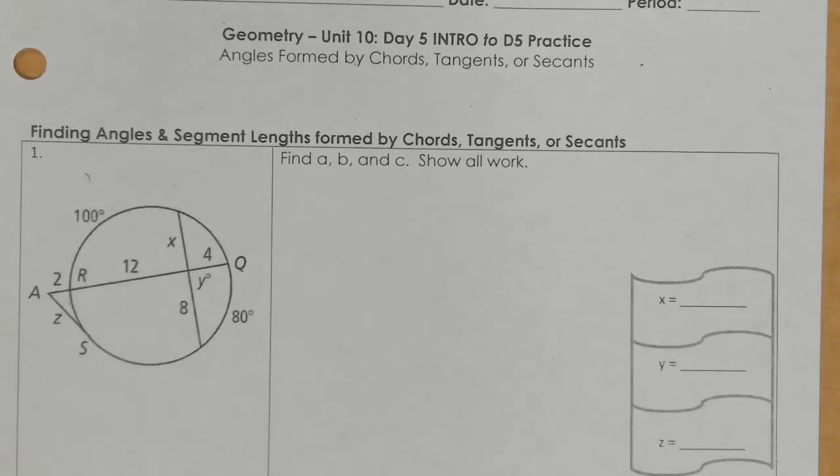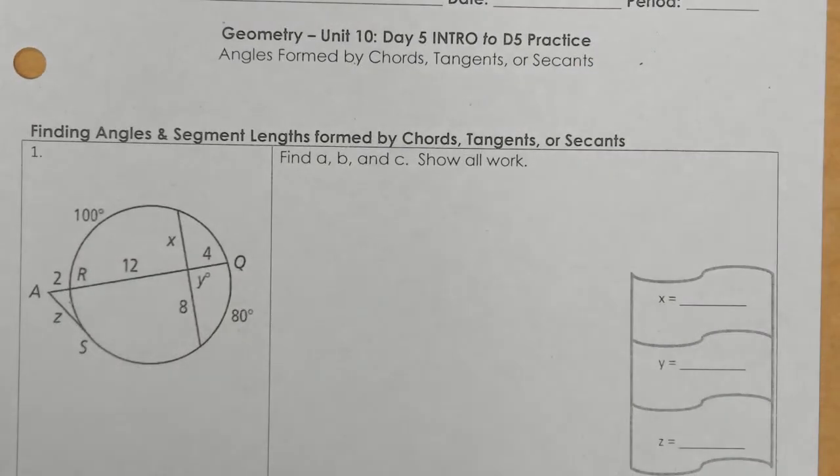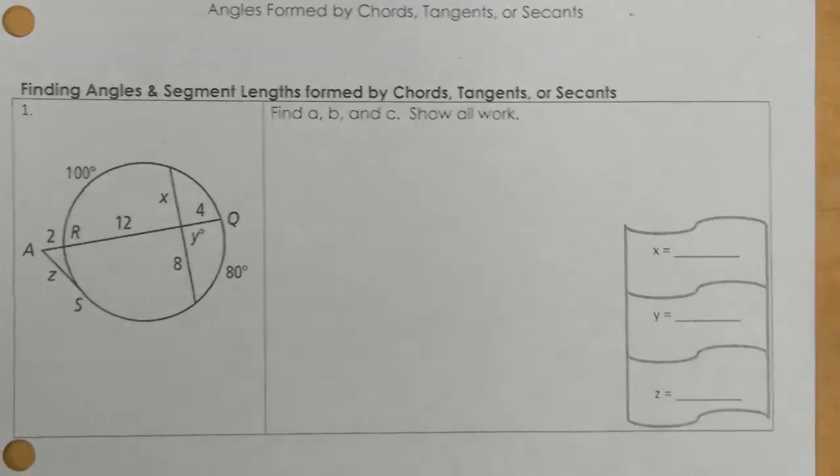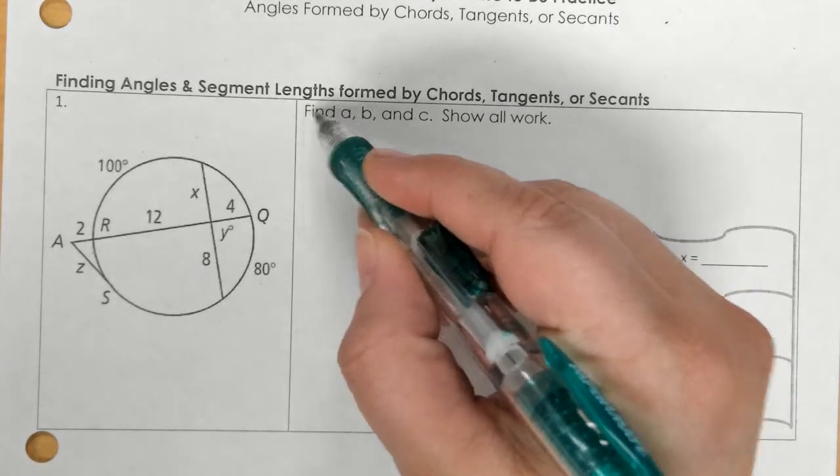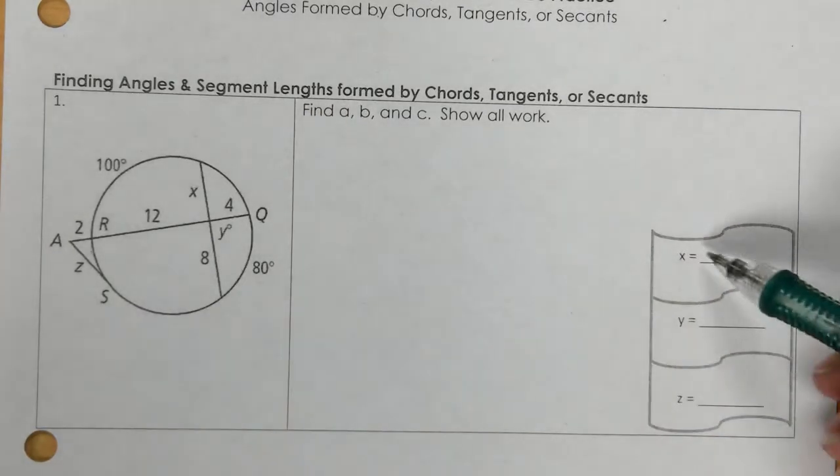This is the day 5 intro to day 5 practice. You have to use three different rules to get your answers: x, y, and z. First of all, this is a mistake. It should not say find A, B, C. It should say find x, y, z.